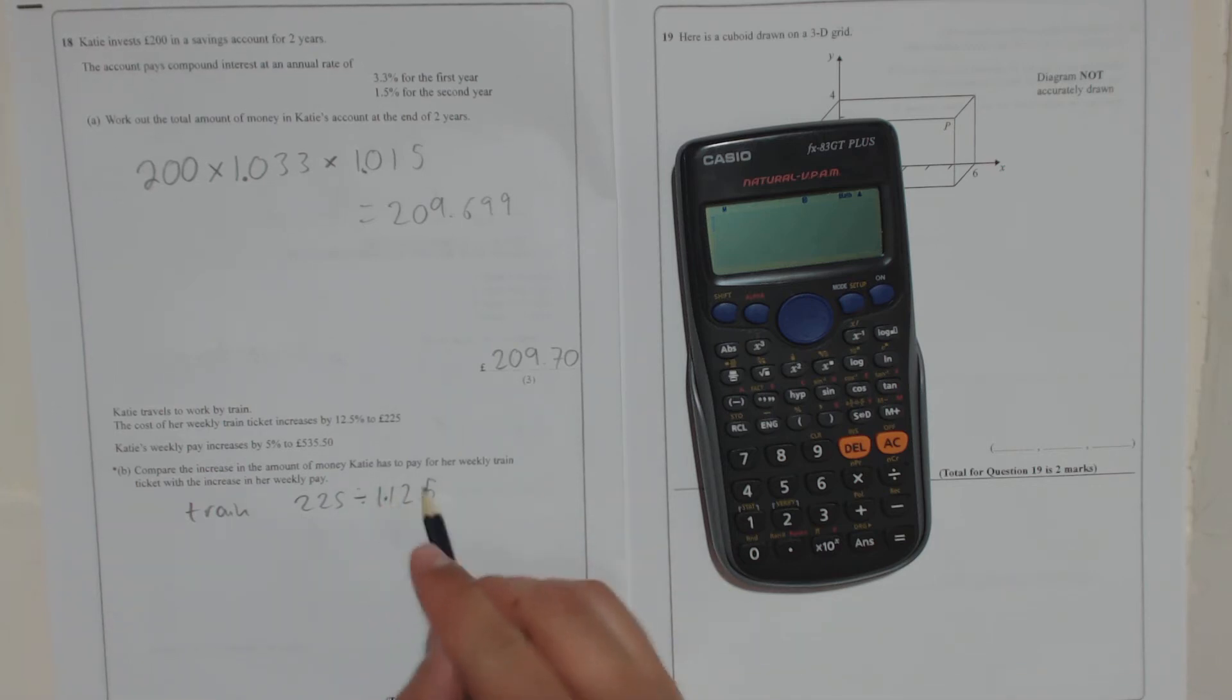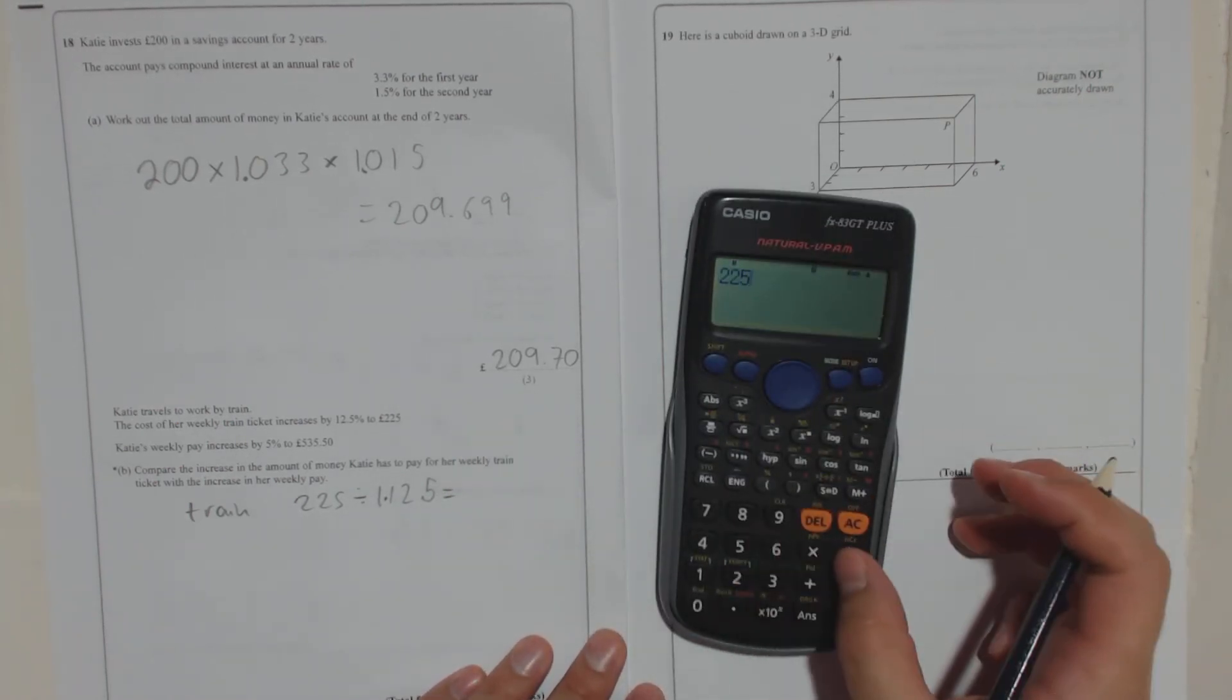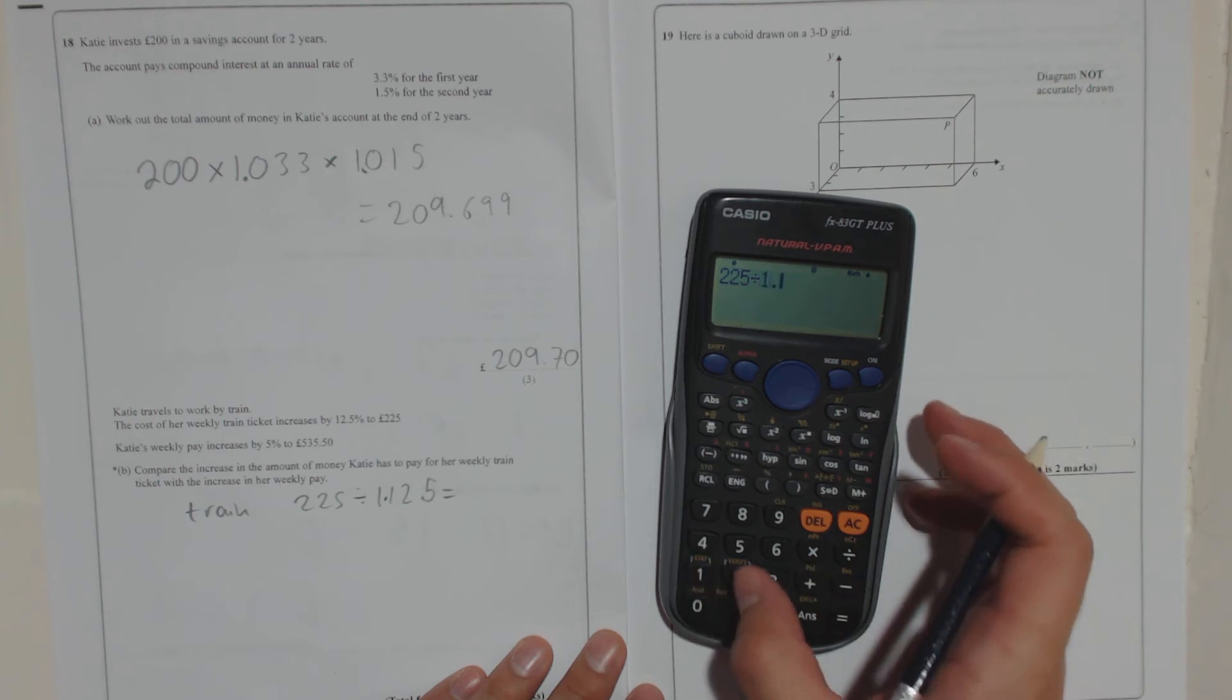So remember, if you multiply by this number, that would be a 12.5% increase. So if we take the new amount and divide it by that, we'll get the old amount. So that is 225 divided by 1.125.